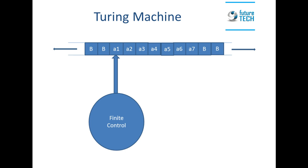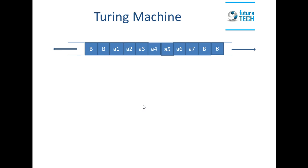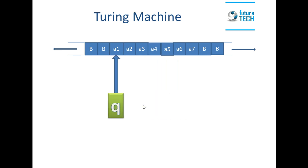The Turing machine can write something into the cell by reading the content from the cell, and it can transit to some different state in the finite control. So if the initial state is Q0 and the tape symbol is A1, and the head reads A1, then the Turing machine can transit to some other state, say Q1, and can write something in place of A1 — it can write X1 — and can move right or left. B is used to represent blank cells.